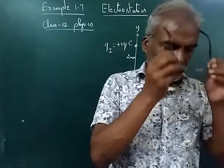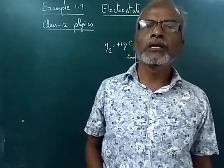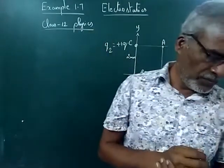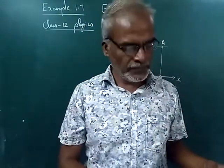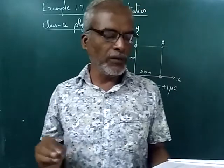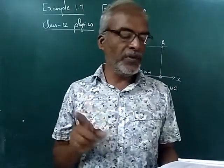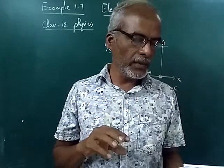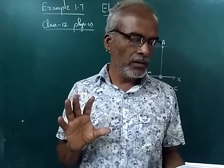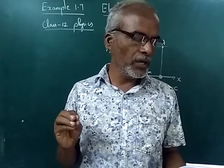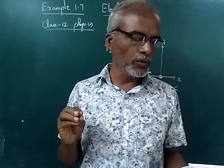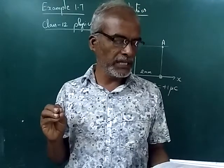Welcome. Today we are going to look at Example Problem 1.7, Electrostatics, Class 12 Physics. The question asks: Consider the charge configuration as shown in the figure. Calculate the electric field at point A. If an electron is placed at point A, what is the acceleration experienced by this electron? Mass of the electron is 9.1 × 10⁻³¹ kg and charge of electron is −1.6 × 10⁻¹⁹ Coulomb.